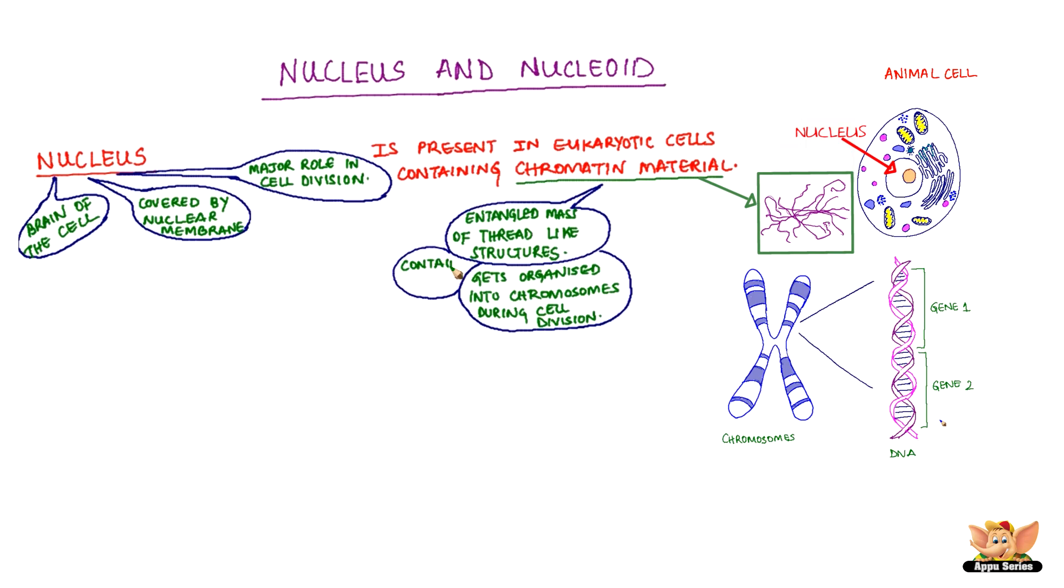Chromosomes contain information for inheritance of features from parents to next generation in the form of DNA molecules. They are composed of DNA and protein. The acronym for DNA is deoxyribonucleic acid.